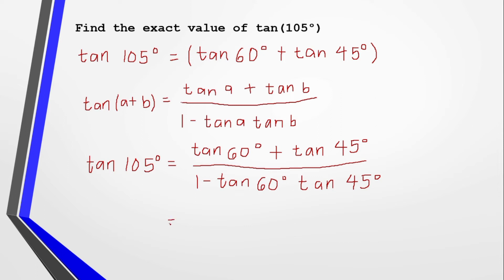So tangent of 105 degrees is equal to tan 60 degrees plus tan of 45 degrees over 1 minus tan 60 times tan 45. Simplifying by replacing trigonometric values: tan of 60 degrees is square root of 3, tan of 45 degrees is 1. So we have square root of 3 plus 1 over 1 minus square root of 3 times 1.